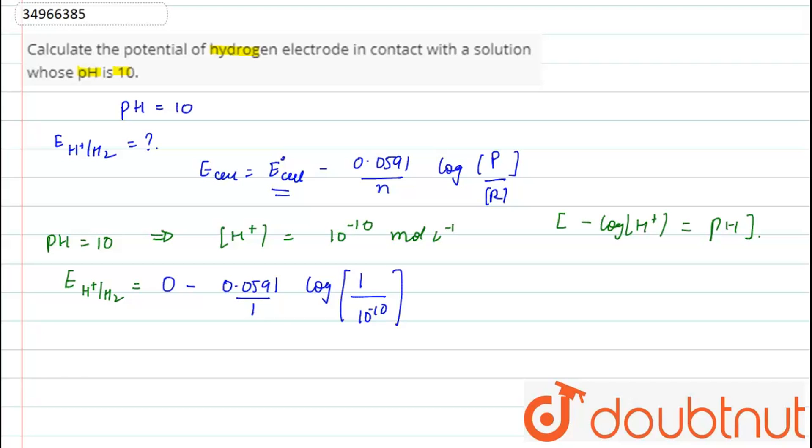Therefore, when we solve this, we get this value as negative 0.0591 multiplied by 10, that is negative 0.591 volts. So this is our value of electrode potential of hydrogen when pH is 10. Thank you.